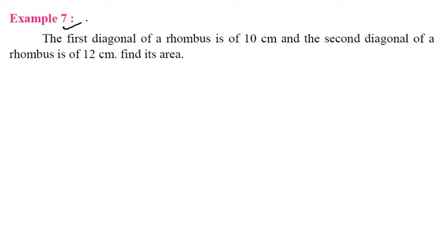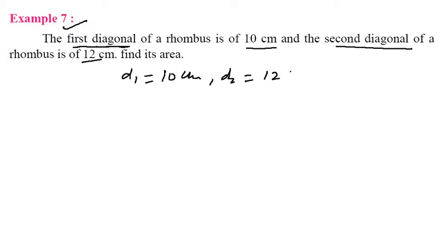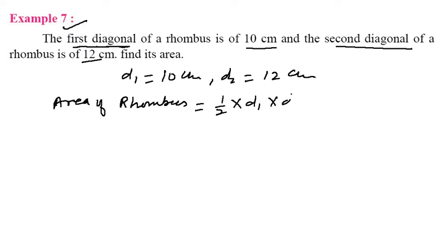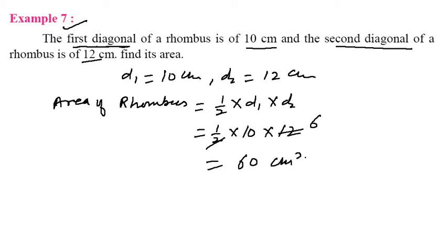Now come to Example 7. The first diagonal of the rhombus is 10 cm, so D1 = 10 cm. The second diagonal is 12 cm, so D2 = 12 cm. Area of rhombus = 1/2 × D1 × D2 = 1/2 × 10 × 12 = 60 cm².